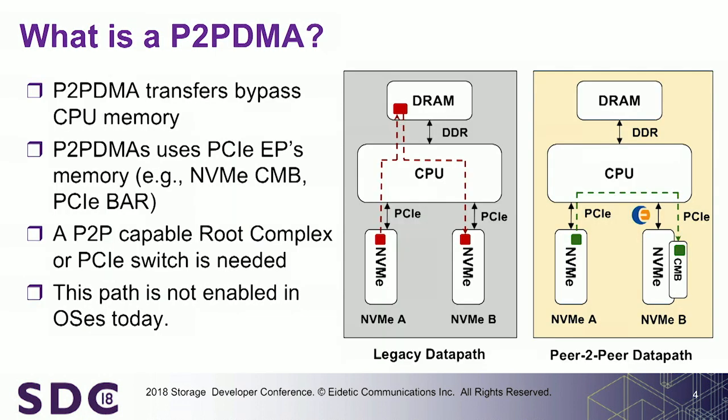So what is a P2P DMA? Basically, it's a DMA that bypasses system memory. Rather than using system memory as the DMA target, we actually use memory provided by the PCIe endpoint itself — that could be a standard PCIe BAR, or something more standardized like an NVM Express controller memory buffer. More and more drives are starting to appear with these controller memory buffers. My company, Eideticom, provides a device today with a very high-performance controller memory buffer on it.